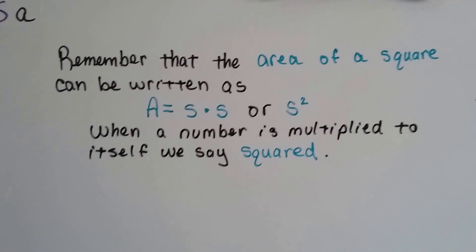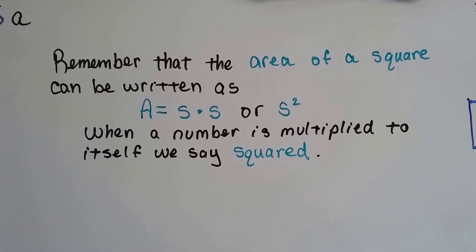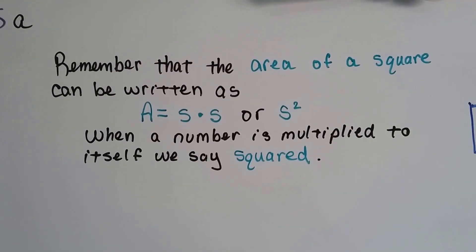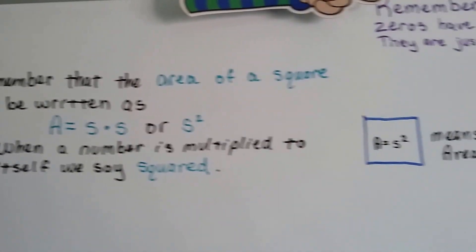Do you remember that the area of a square can be written as A equals side times side or S with a little two exponent for S squared?